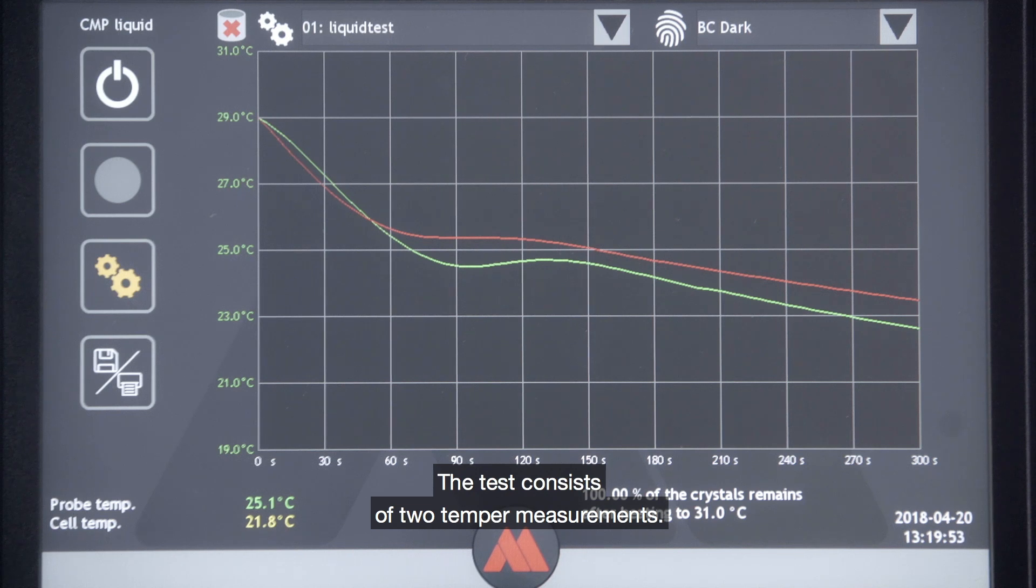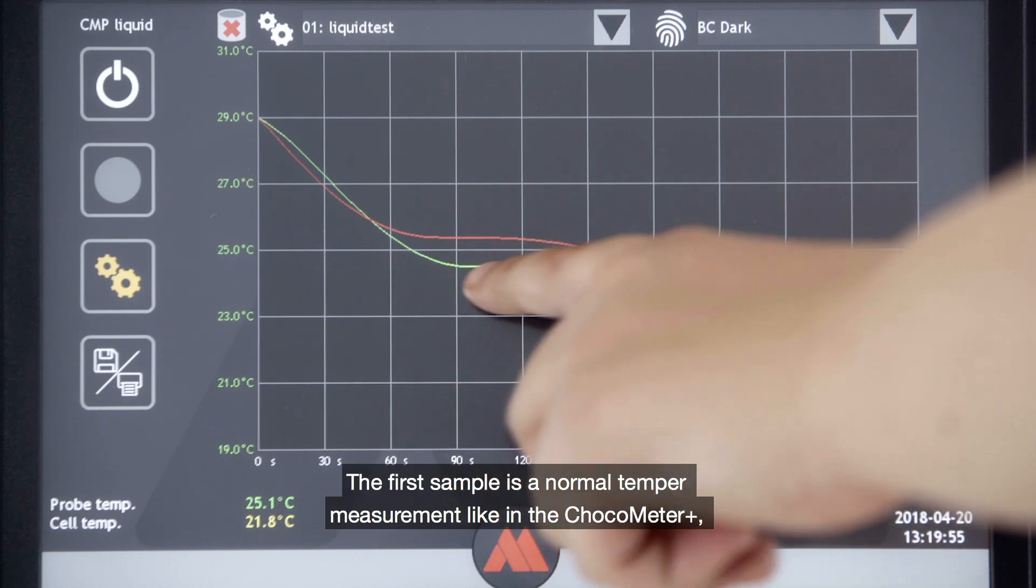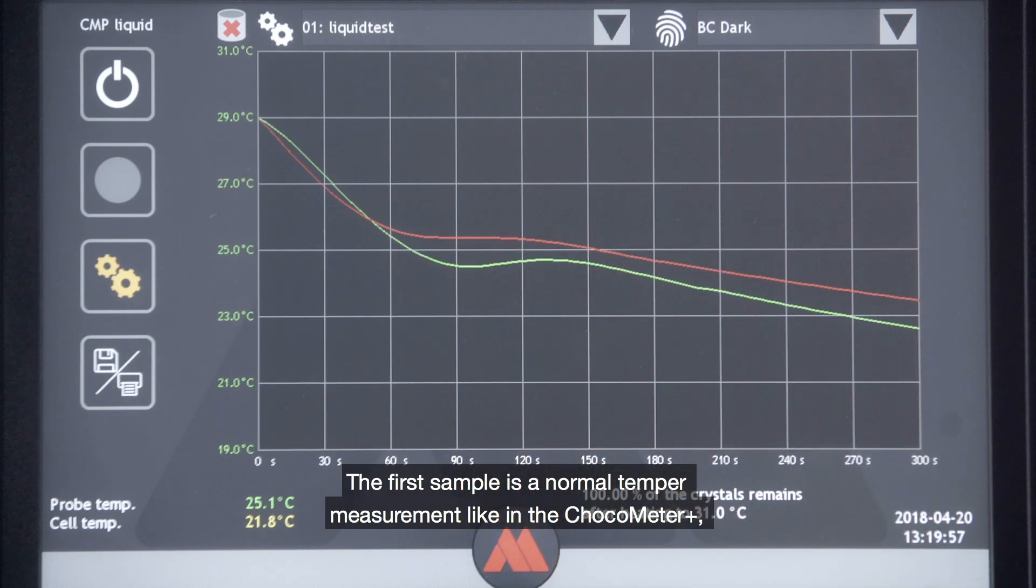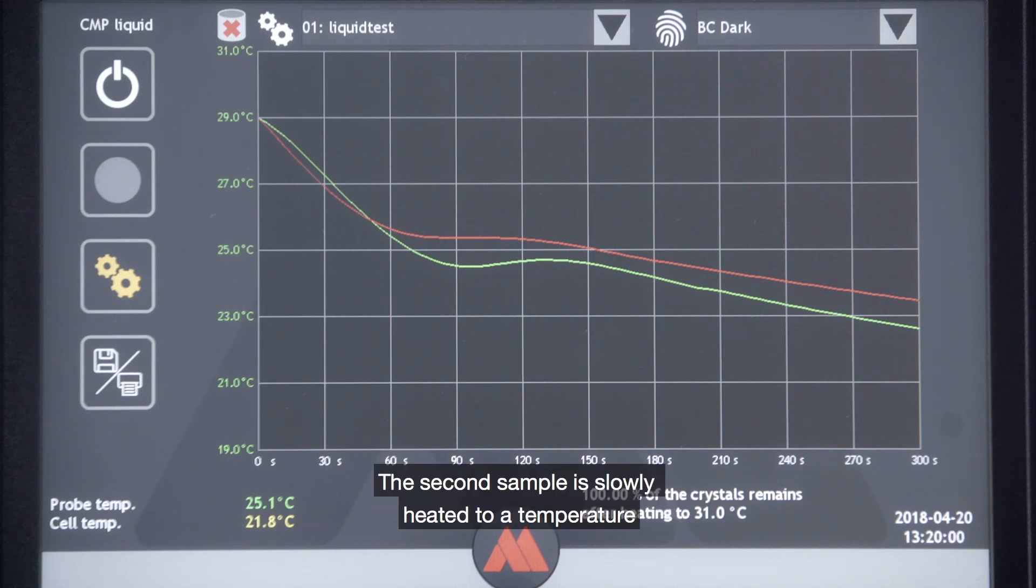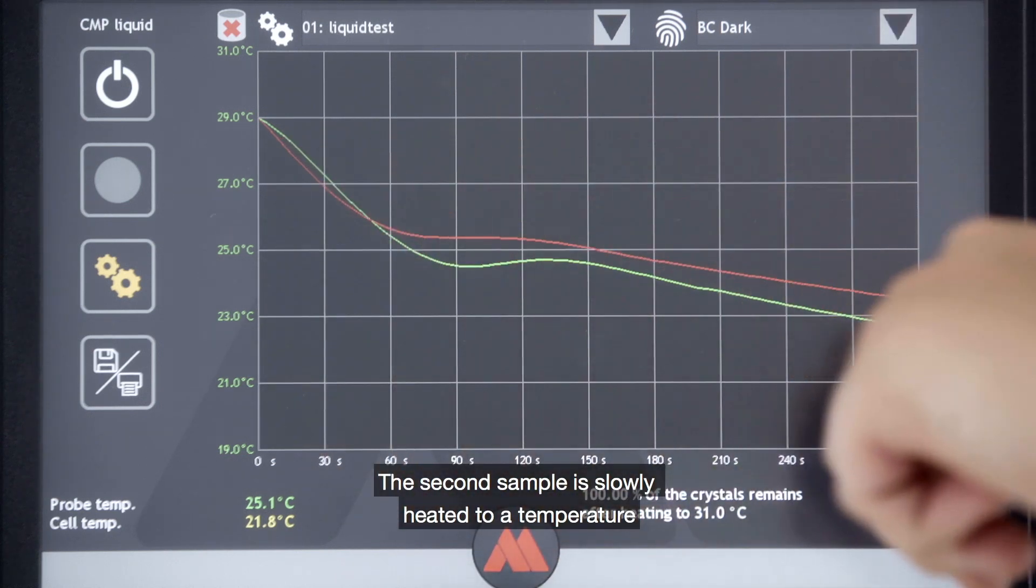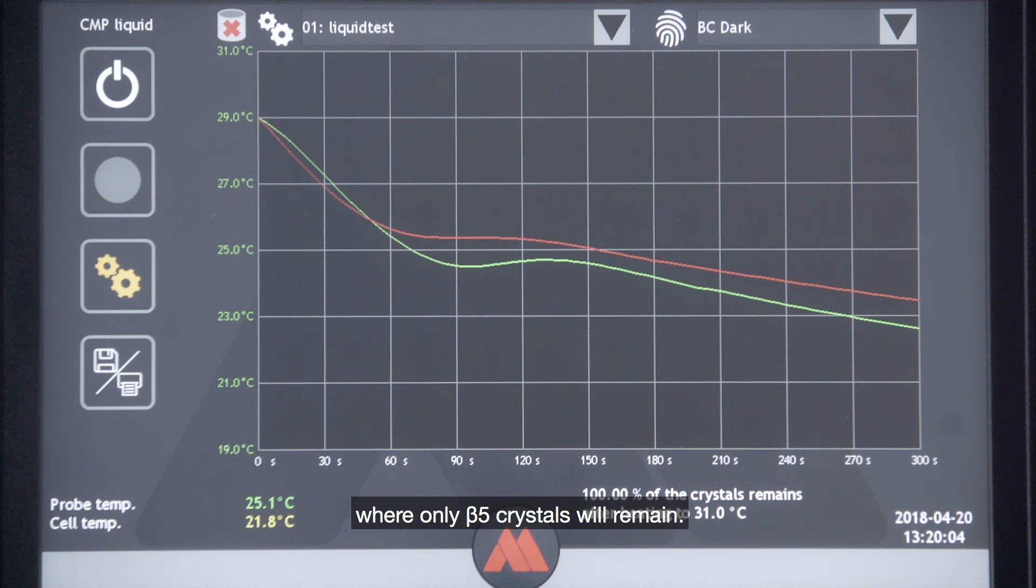The test consists of two temper measurements. The first sample is a normal temper measurement like the ChocoMeter Plus. This is the reference sample. The second sample is slowly heated to a temperature where only better five crystals will remain.